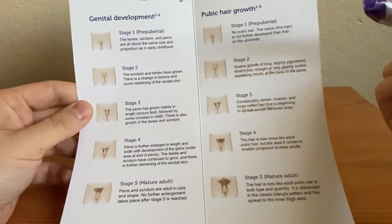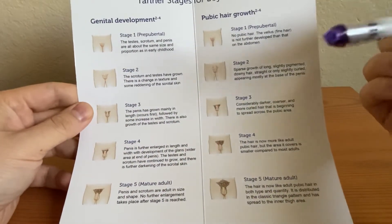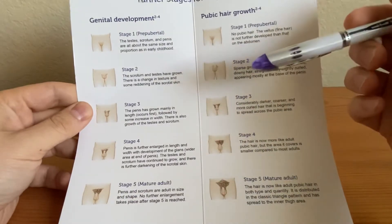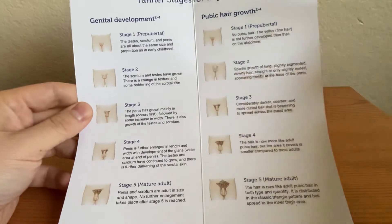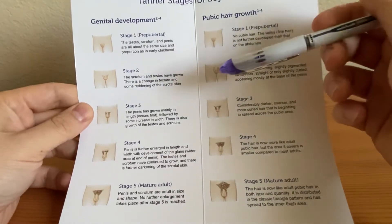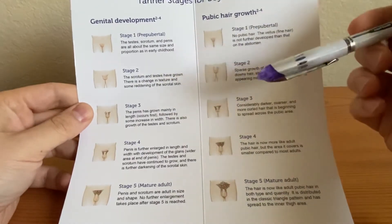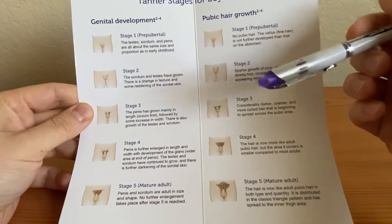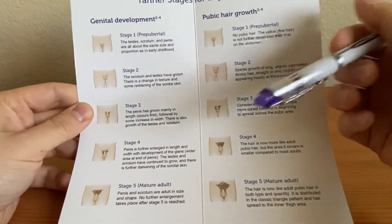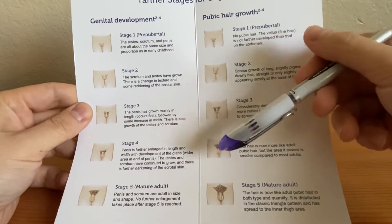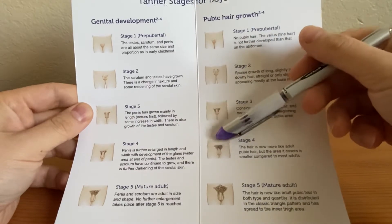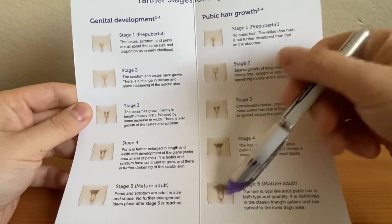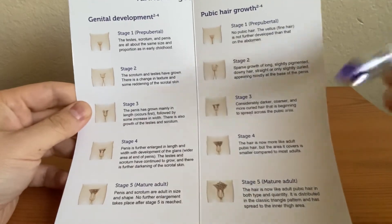As for coarse hairs, they don't mention it too much on exams, but it's good to know during your rotations. Stage one there's nothing. Stage two there'll be just a little bit on the sides. Stage three it gets a little darker, coarser, and more curly. Stage four it becomes more growth but it's not fully up towards the umbilicus. Stage five is pretty much mature growth where the hair is fully all over the place.